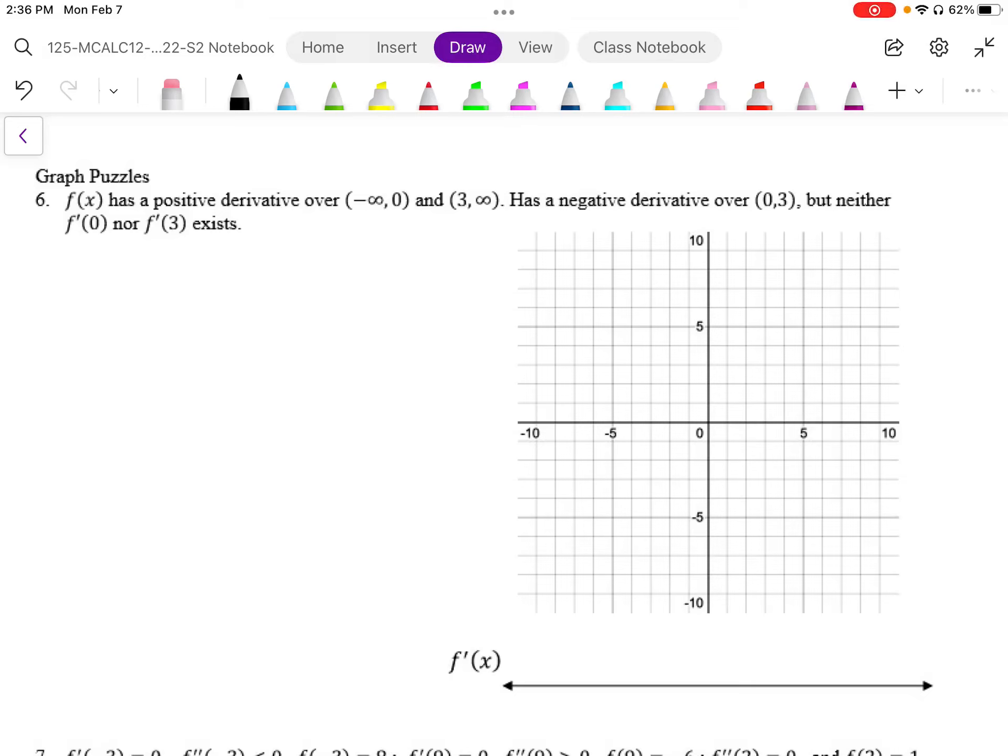This graph puzzle tells us that f has a positive derivative from negative infinity to 0 and from 3 to infinity.